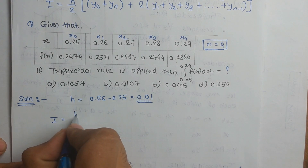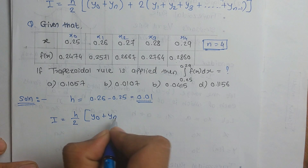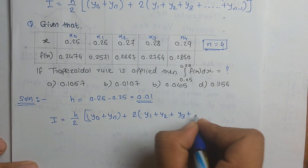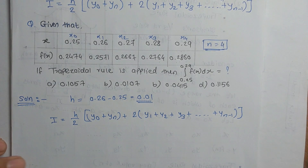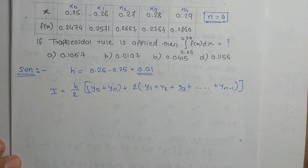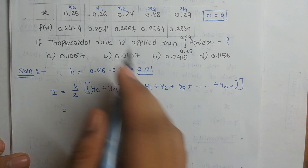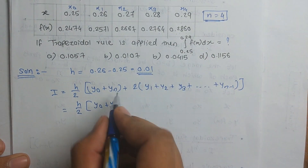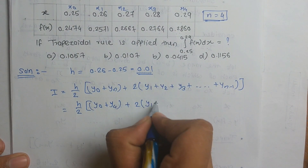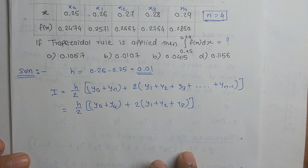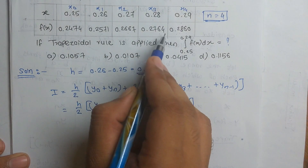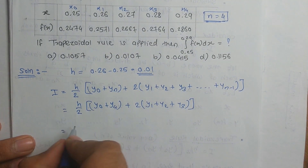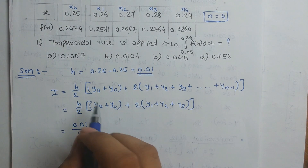We apply the formula: I = h/2 × [(y₀ + yₙ) + 2(y₁ + y₂ + y₃ + ... + yₙ₋₁)]. Substituting into this form: h/2 remains as is, then (y₀ + y₄) plus 2 times (y₁ + y₂ + y₃). This means first term plus last term, plus twice all the middle terms.